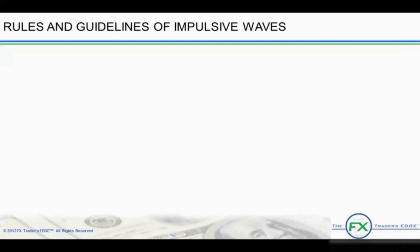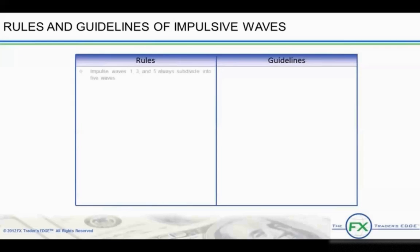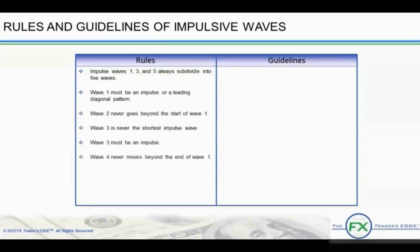And now for some rules and guidelines of impulse wave structures. First, the rules. 1. Impulse waves 1, 3, and 5 always subdivide into 5 waves. 2. Wave 1 must be an impulse or a leading diagonal pattern. 3. Wave 2 never goes beyond the start of wave 1. 4. Wave 3 is never the shortest impulse wave. 5. Wave 3 must be an impulse. 6. Wave 4 never moves beyond the end of wave 1. 7. Wave 5 must be an impulse or an ending diagonal pattern. 8. Waves 1, 3, and 5 can never all be extended.